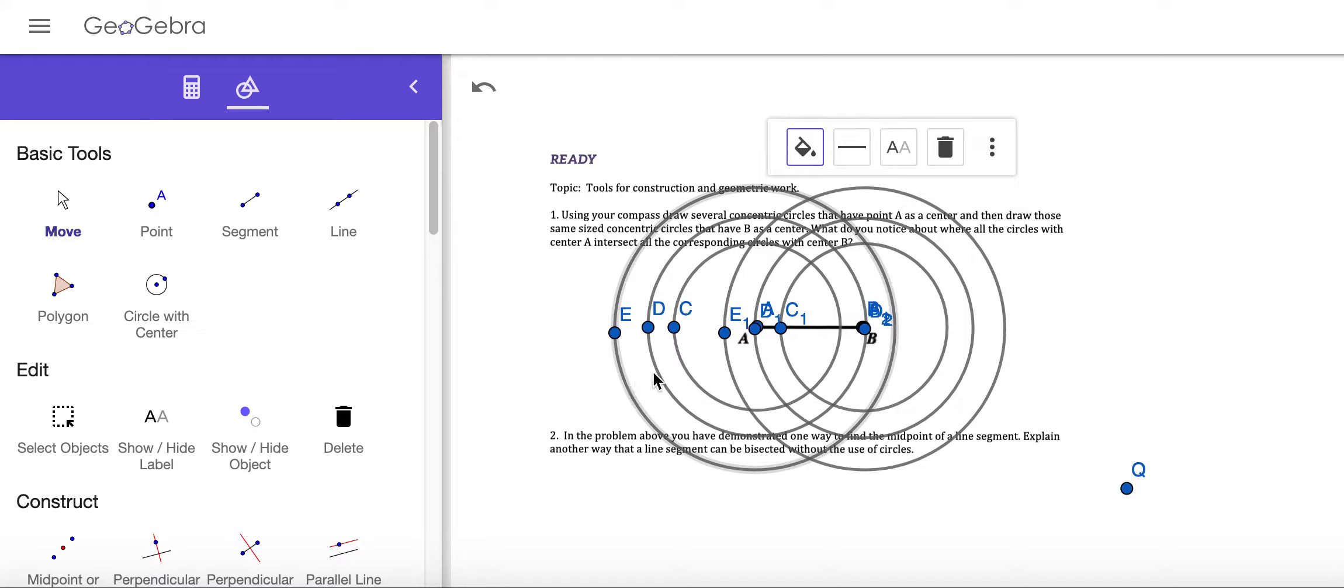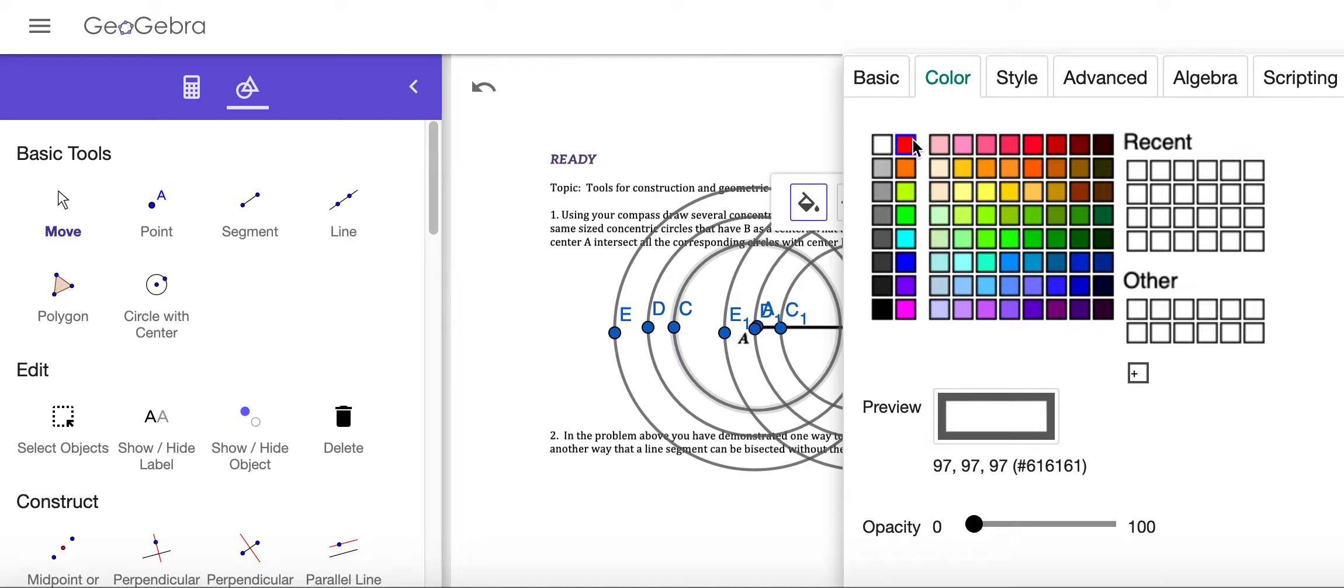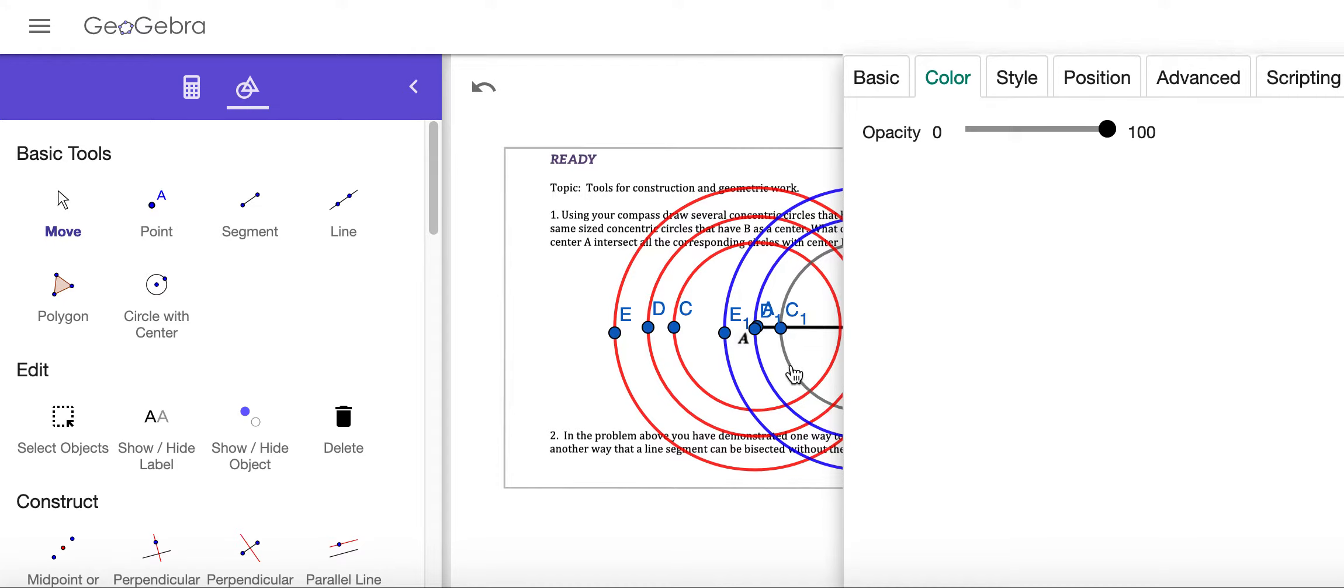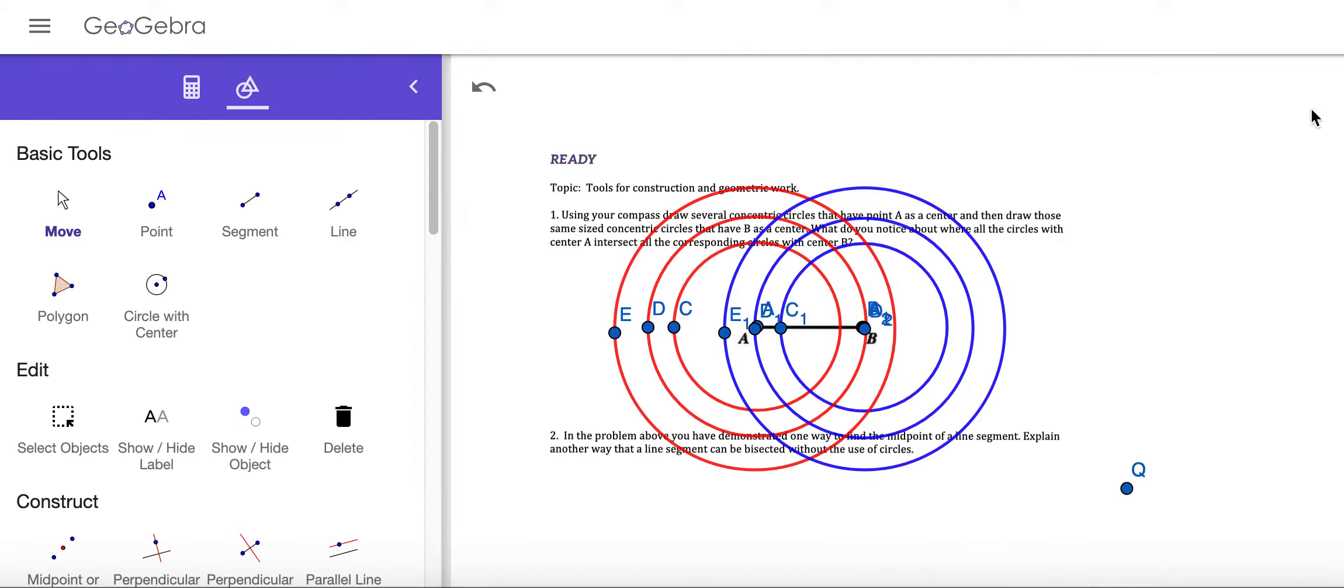One set is around set A and we'll make those red. Those three are concentric and another set around B and those three are concentric. So we have two sets of concentric circles on the same size.